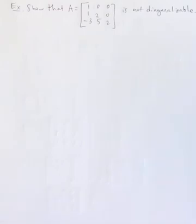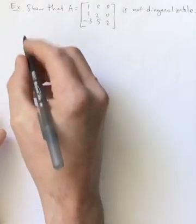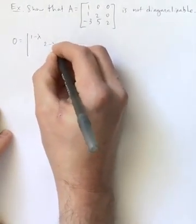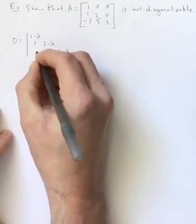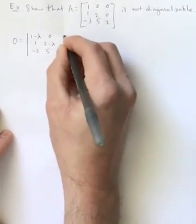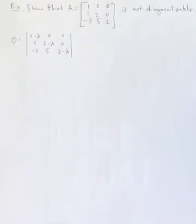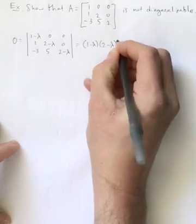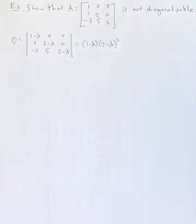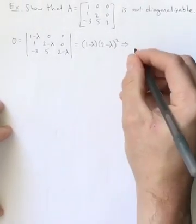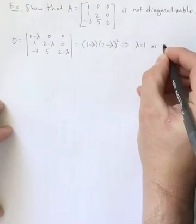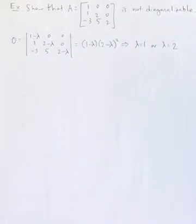I'm going to start this the same way I started the last example. I'm going to find the eigenvalues. I'll subtract lambda off of the main diagonal and keep everything else the same and set that determinant equal to zero. This is a triangular matrix, so the determinant is actually very easy to find. You just multiply the entries on the main diagonal together. So solving for the eigenvalues is pretty easy - we get lambda equals 1 or lambda equals 2.